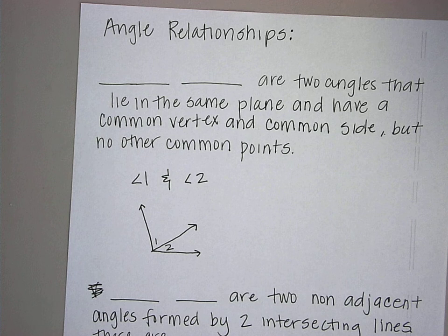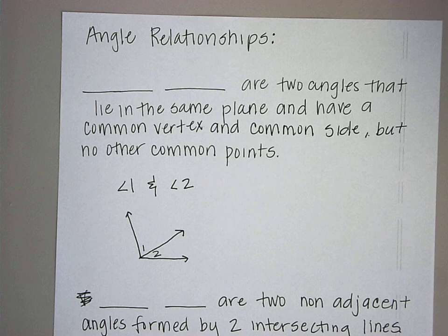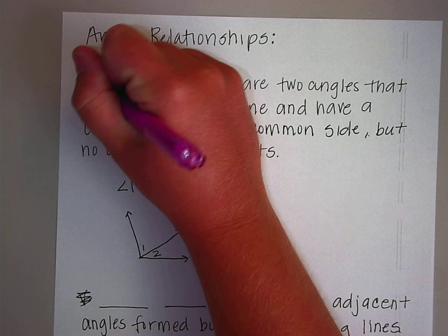Today we are going to be talking about angle relationships. There are four different types of angle relationships that we can have, and once we learn those types of angle relationships, we can start solving with those relationships.